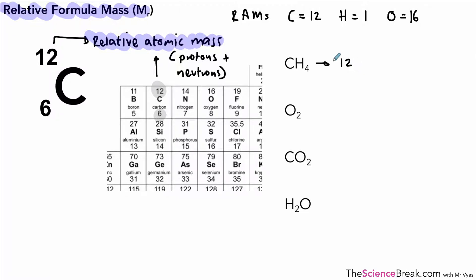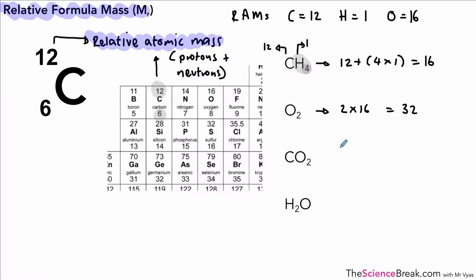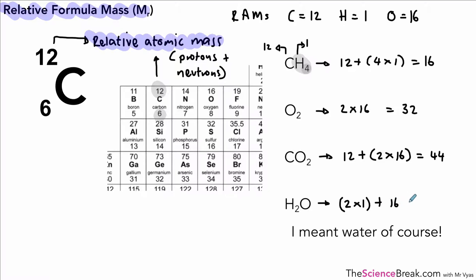For methane (CH₄), carbon's relative atomic mass is 12 and hydrogen's is 1, so the relative formula mass is 12 + (4 × 1) = 16. Remember, that little 4 applies only to hydrogen. For oxygen (O₂) it's 2 × 16 = 32. For carbon dioxide (CO₂) it's 12 + (2 × 16) = 44. For water (H₂O) it's (2 × 1) + 16 = 18. Remember there are no units for these values.